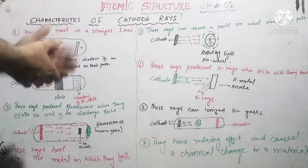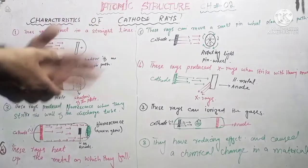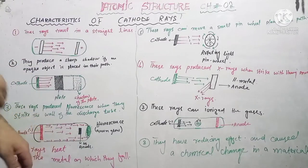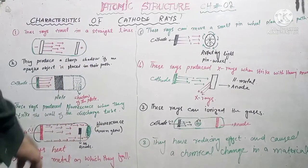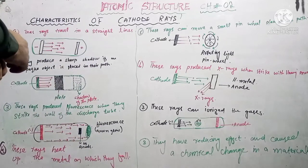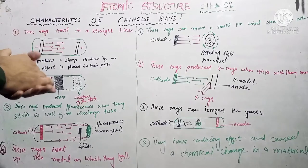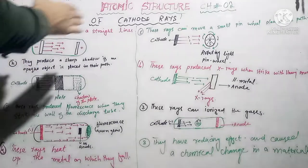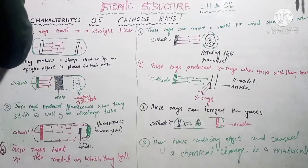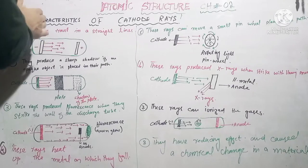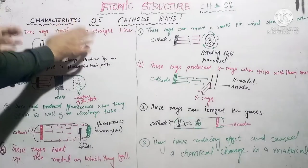Today we are going to talk about the characteristics of cathode rays. This topic is taken from chapter number 2, atomic structure. The first characteristic is that these rays travel in straight lines, perpendicular to the cathode surface and away from the cathode, moving toward the anode.